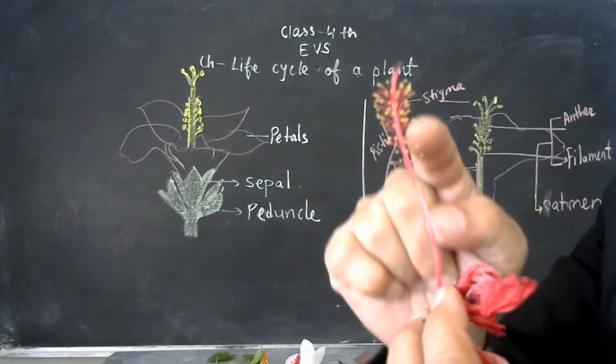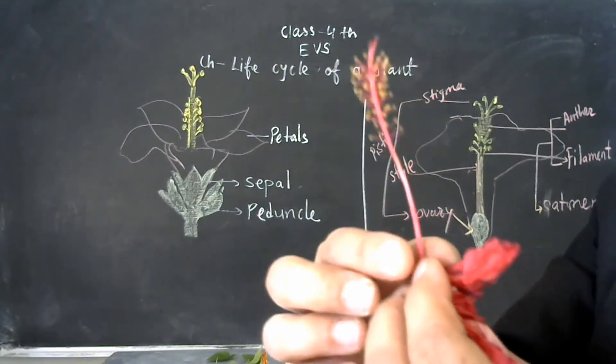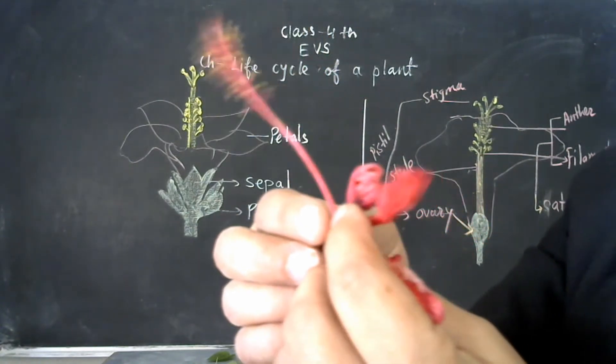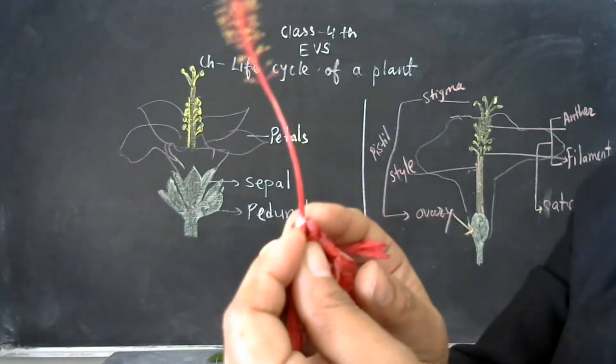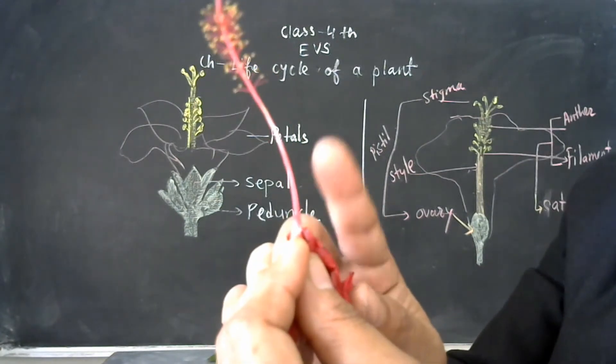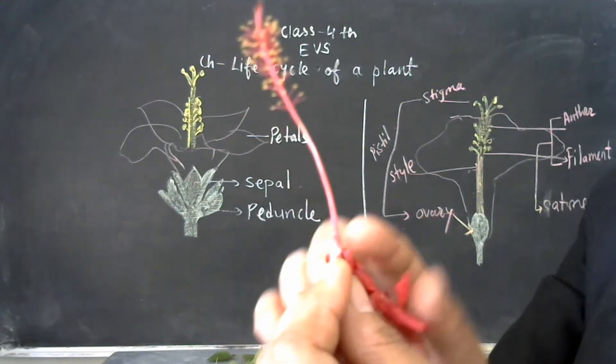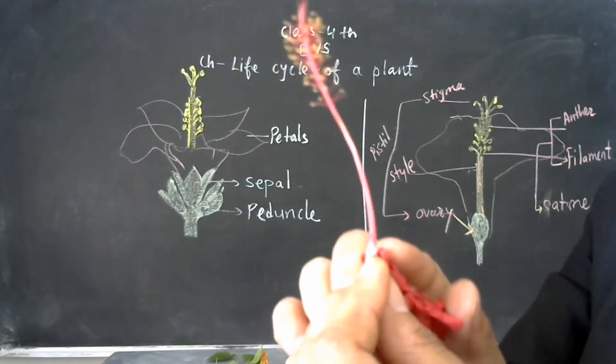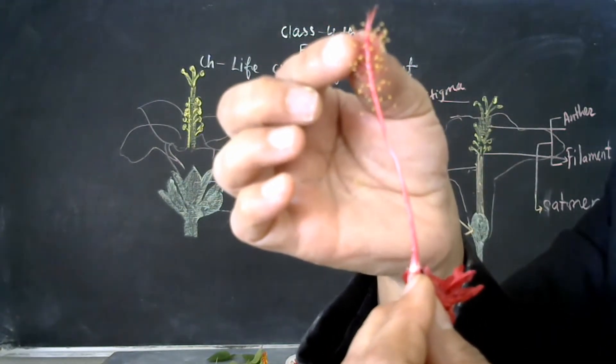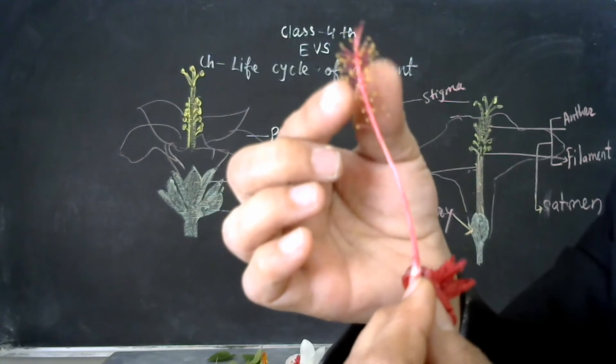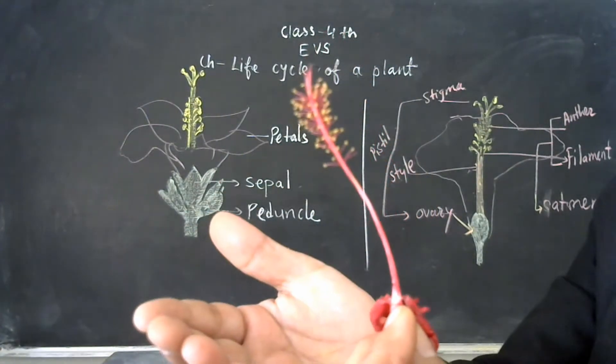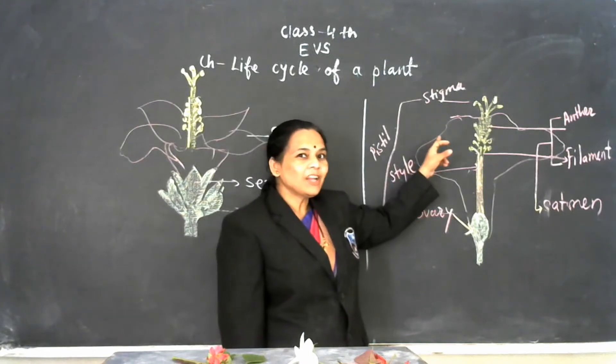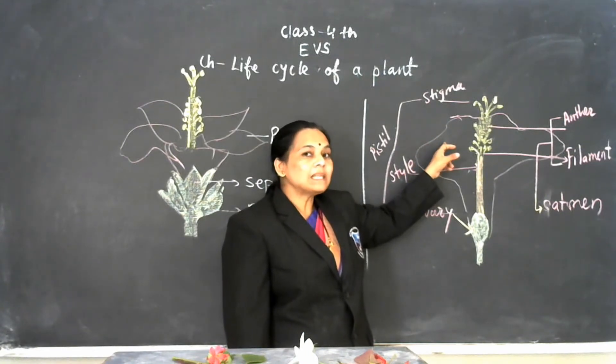On the top side is known as stigma. The stigma, filaments, anther and the style, it ends in the ovary. Ovary is the female reproductive organ of that plant flower, while these anthers are known as male reproductive part of that flower. You have seen in the flower all parts already.